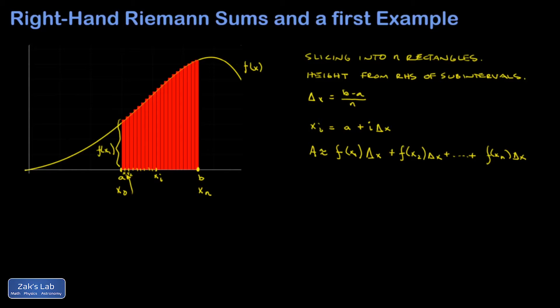This can be written in summation notation and I'll call it a right-hand sum. It'll be the sum as i goes from 1 to n of f(xᵢ) delta x. So now we've got a formula that allows us to approximate an area by using the right-hand side of each subinterval for the height of all the rectangles we're slicing into.